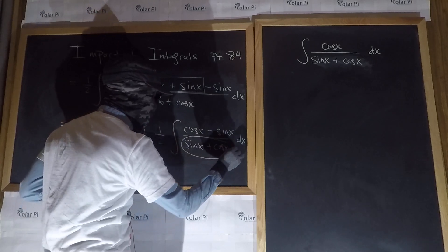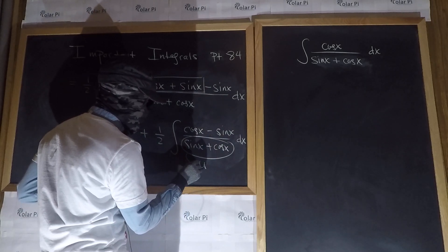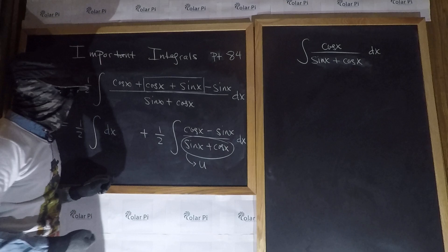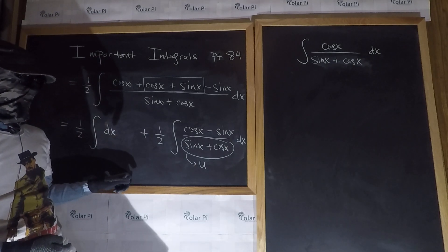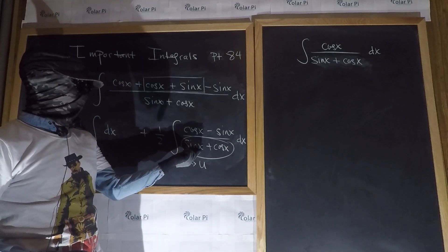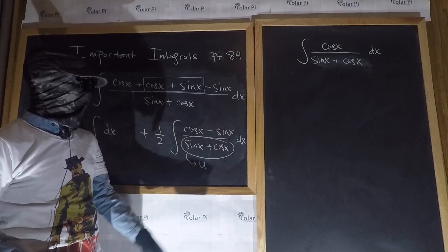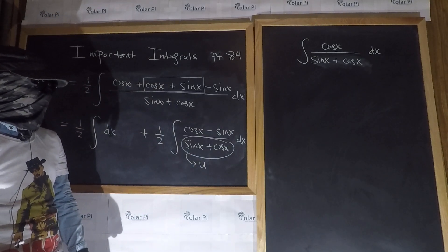If we let u be sin x plus cos x, what's du going to be? du is going to be the derivative of this, which is cos x, plus the derivative of this, which is negative sin x, and then dx, right? That's du.